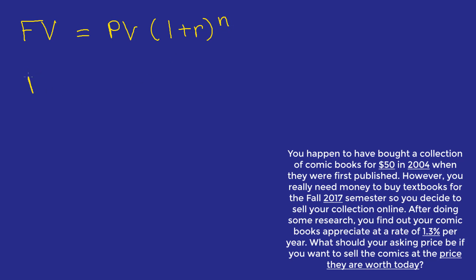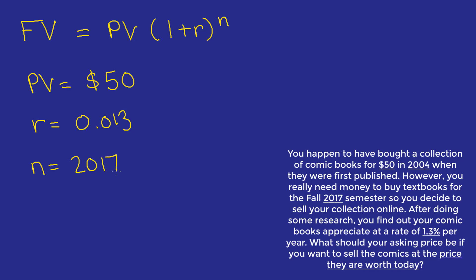We know that the present value is equal to $50, which is what we paid for the comic books in 2004. We know that the rate at which the comic books grow in value is 1.3% or 0.013. And we know that n, the number of periods, can be found by subtracting 2004 from 2017 — 2017 is the year in which we're selling the comic books and 2004 is the year we bought them — giving us 13 years.